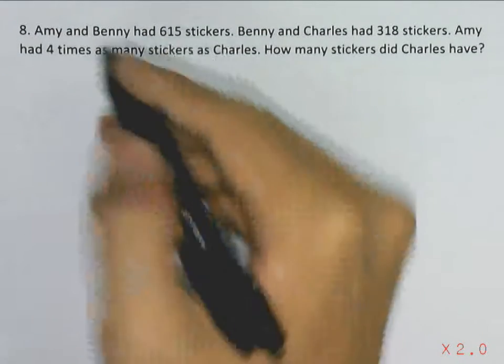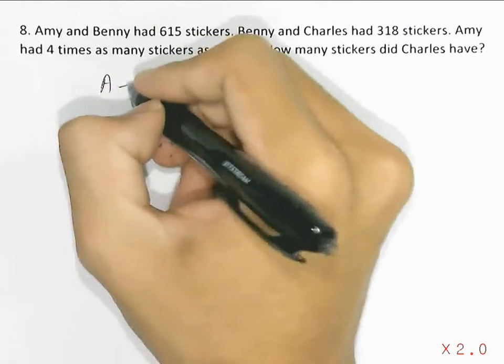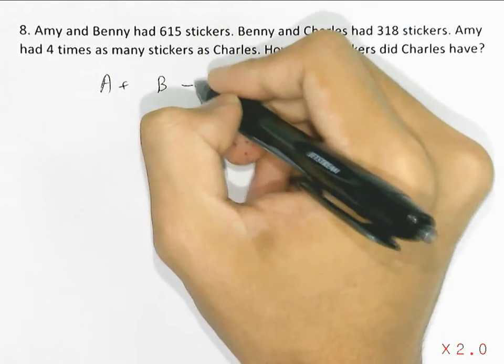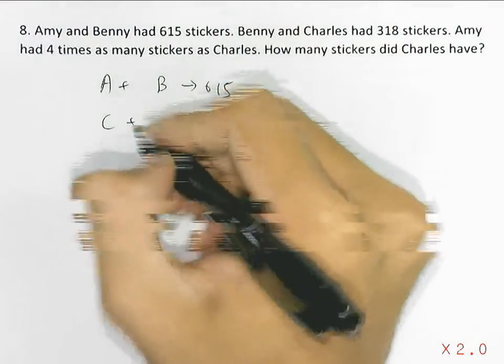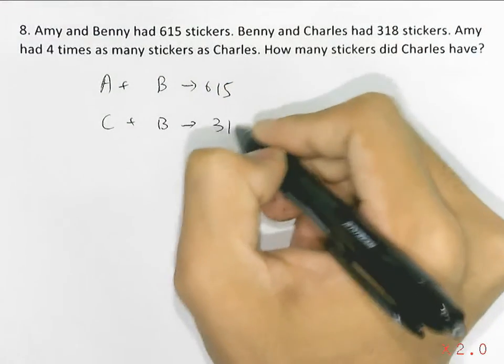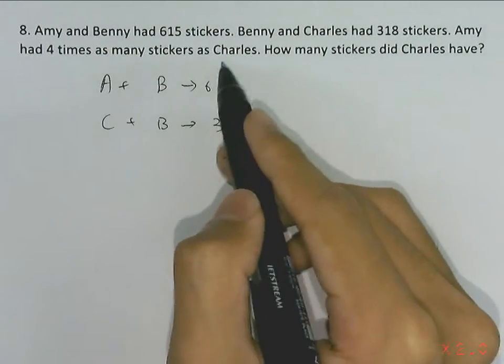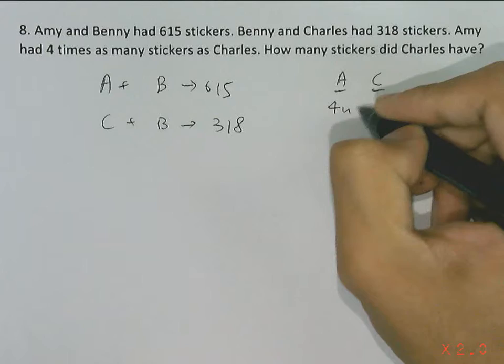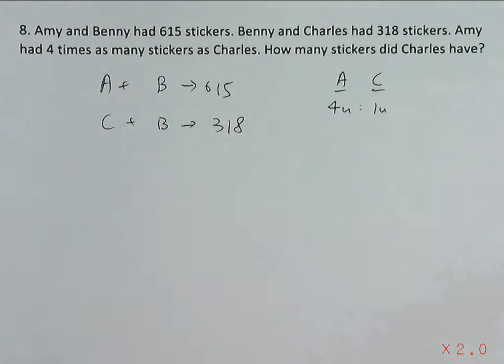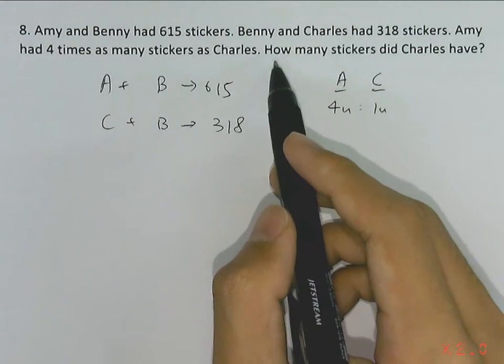Amy and Benny had 615 stickers total, while Benny and Charles have a total of 318. Amy had four times as many stickers as Charles, so if you have Amy and Charles, the ratio will be four units to one unit.